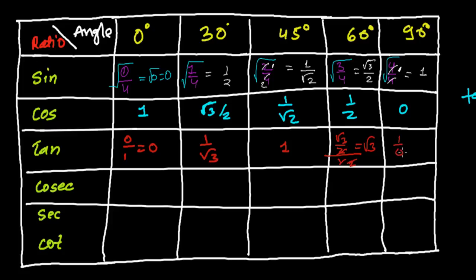Tan 90° = 1/0, which is an undetermined value. We generally use the infinity symbol to represent it, because anything over 0 is undetermined.